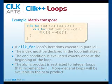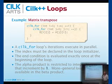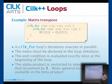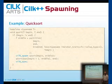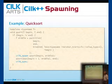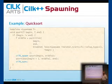The alpha product is restricted to integer loops that increment by one, as shown here. More general loops will be available in the beta product, so we'll have very general types of loops, but for now it's restricted to this simple type. That was the SILK4 keyword.